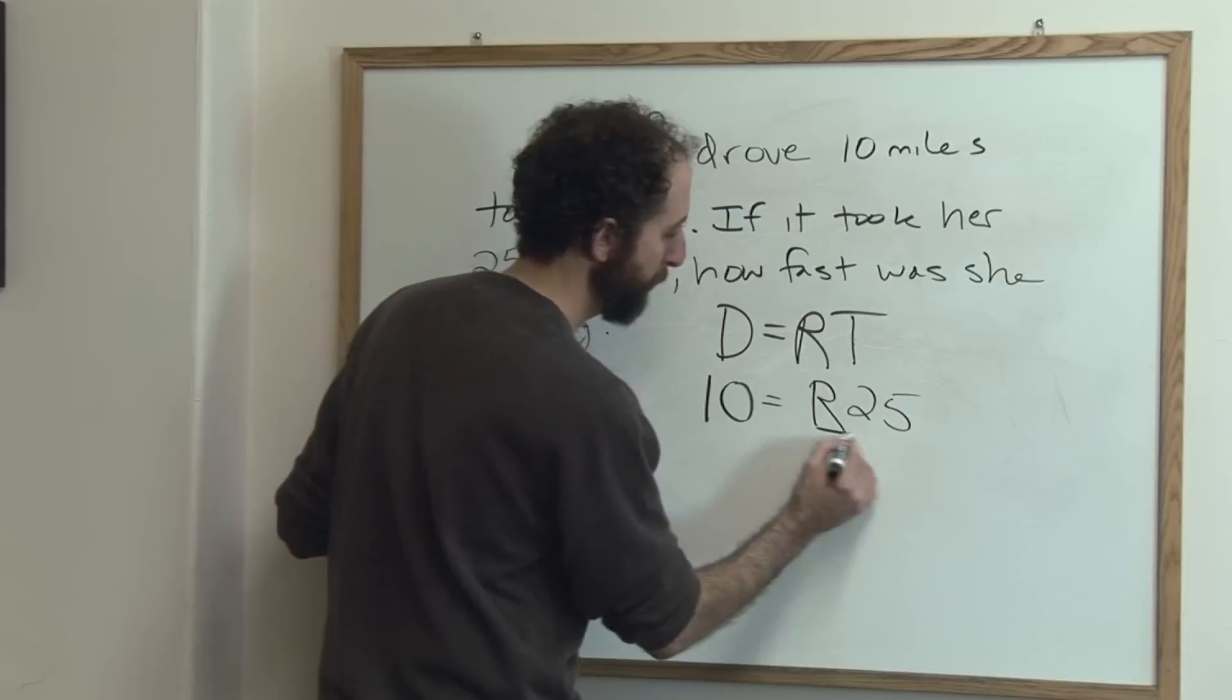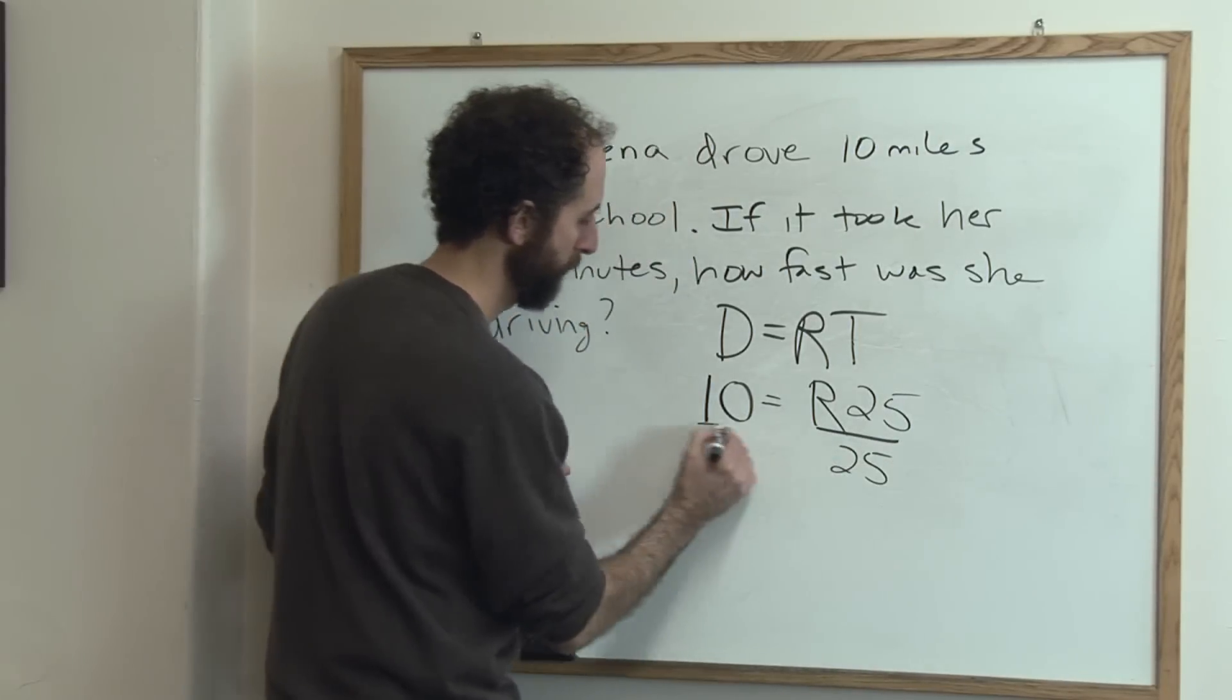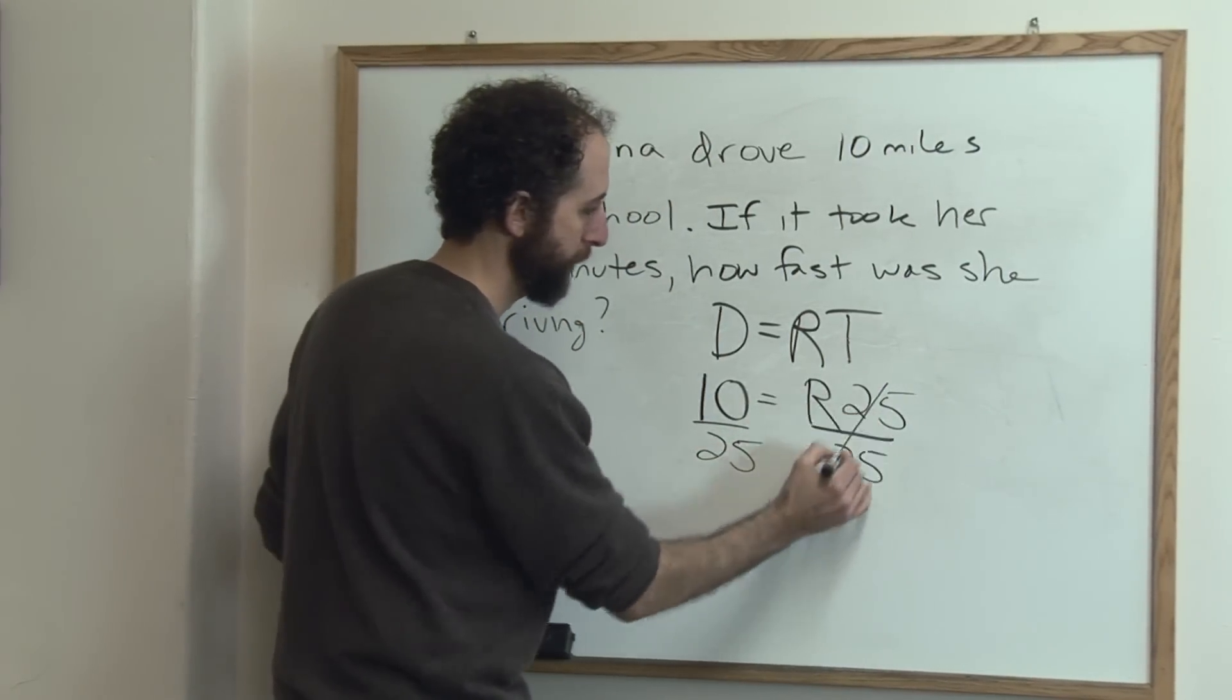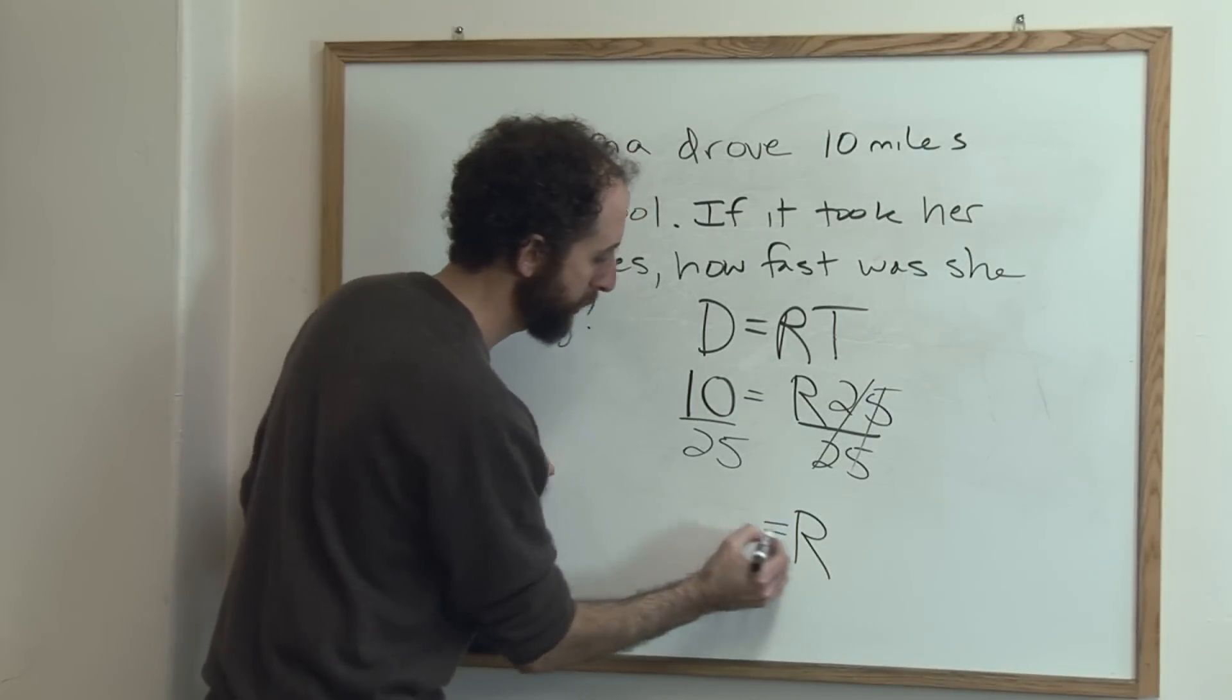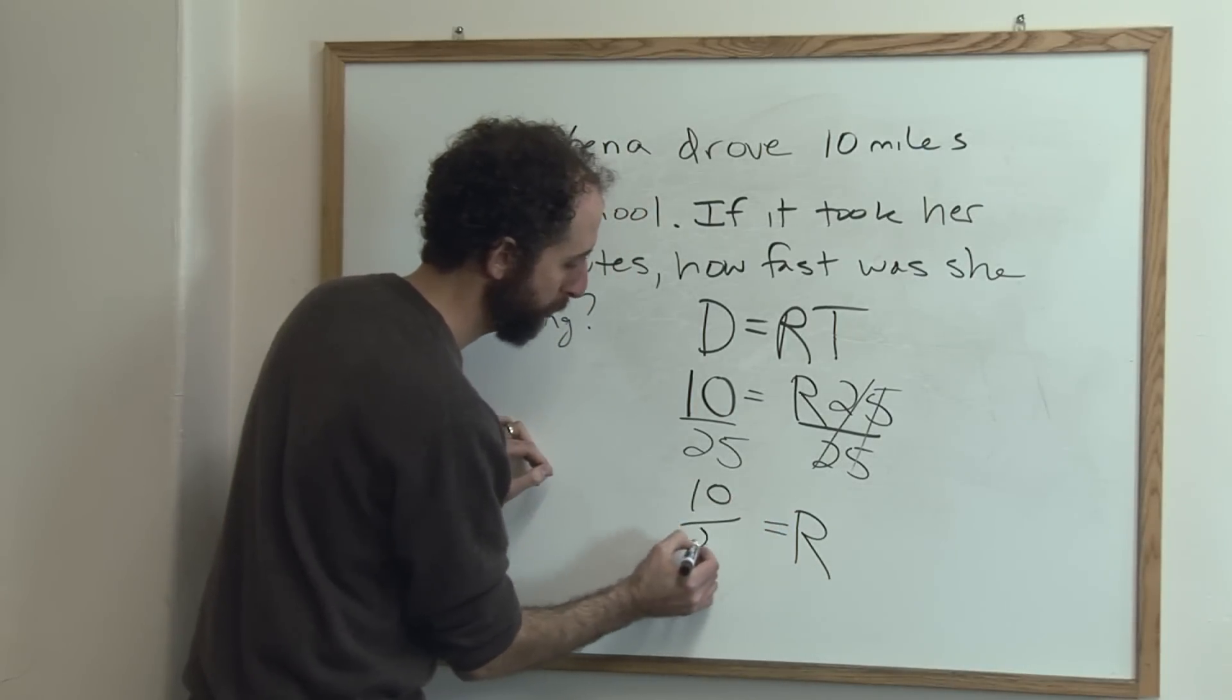So to get R alone, we divide both sides by 25. Cancels. That's why we did it. R alone equals 10 over 25.